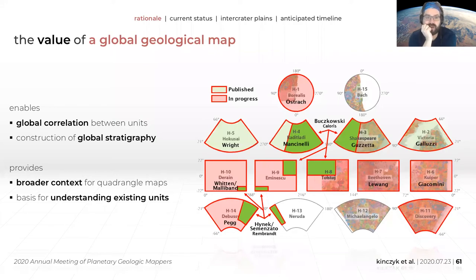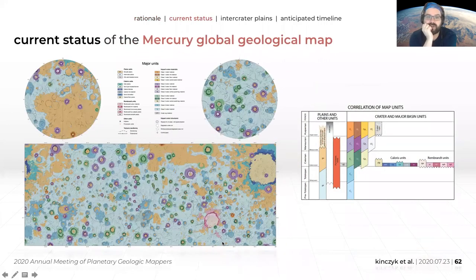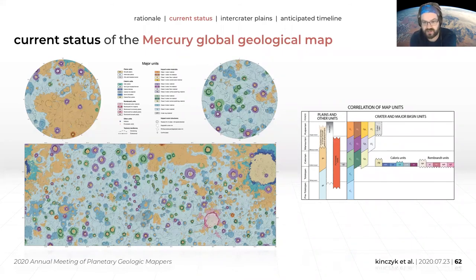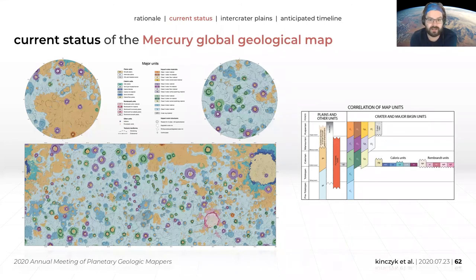The current status of this map — those of you who've been here the last few years have seen a version of this already. The global map status hasn't changed very much from last year insofar as how it looks. We basically have the major map units in place, descriptions for them, the correlation of map units essentially done, and most of the stuff is done. The one particular aspect we are tackling — the focus of what we've been doing lately — is work that Mallory has been doing with Brett Denevi and Debra Domingue, to try and identify subunits of the intercrater plains.